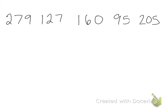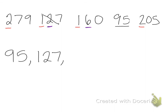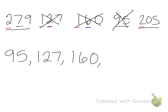To put them in order from least to greatest I need to start with the smallest number. My smallest number is 95 because there are no hundreds. Next I look at the hundreds place: I have a 2, a 1, a 1, and a 2. The next smallest must be one of the 1-hundreds numbers. Since they both have 100 I look at the tens — 2 is smaller than 6, so next is 127, then 160. Then I have 205 and 279. Looking at the tens, 0 is smaller than 7, so 205 comes before 279.